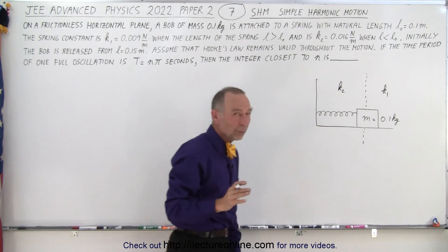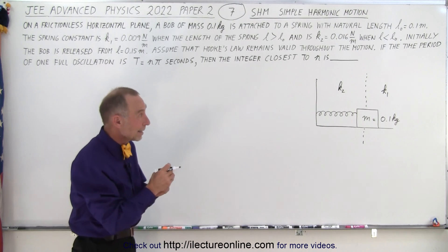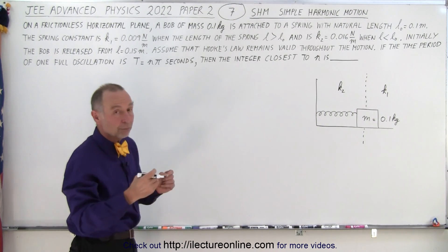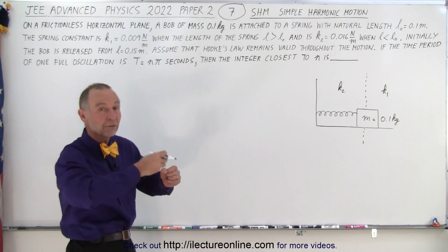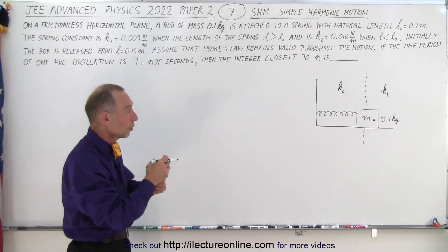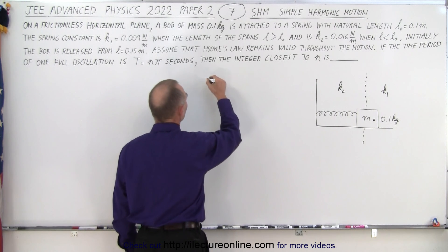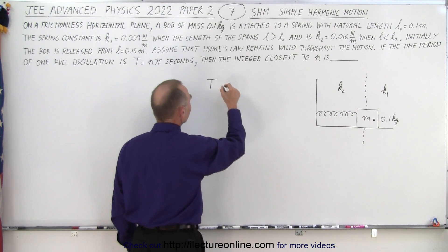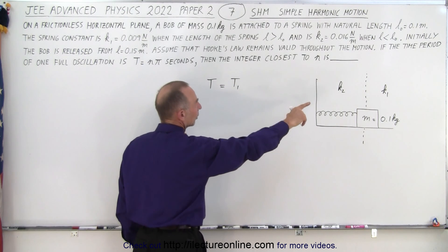So essentially what we can do since they tell us that it's following Hooke's law which means that the extent of the elongation beyond the equilibrium point doesn't really matter, the frequency is independent of the amplitude of the oscillation. So therefore we can say that the total period for a whole oscillation is equal to the period for the oscillation when we use k1.